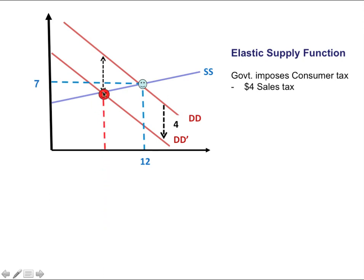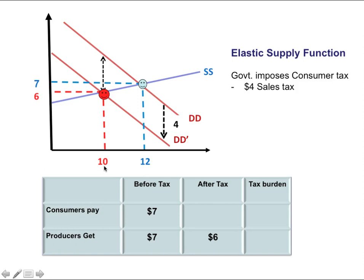Now let's talk about tax burden — how much consumers and producers are paying and receiving. Before taxes were imposed, consumers were paying the equilibrium price of seven dollars, and producers were receiving seven dollars.